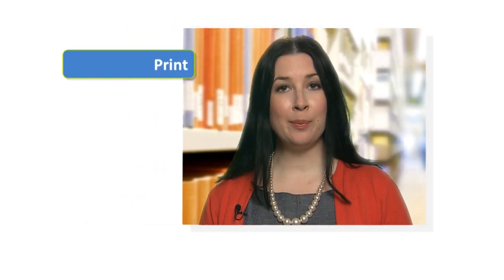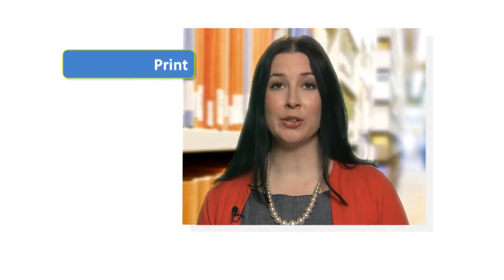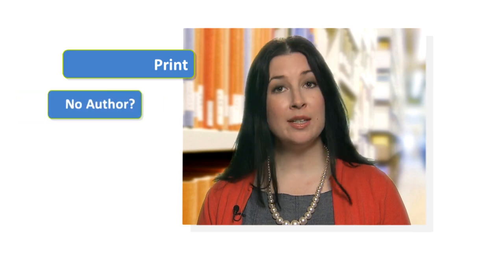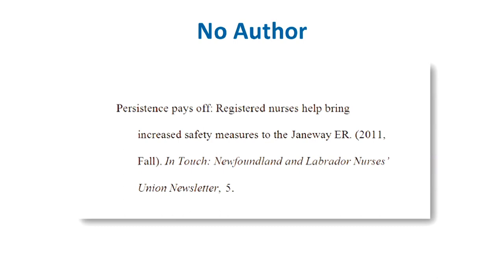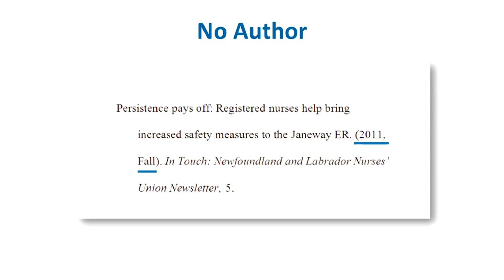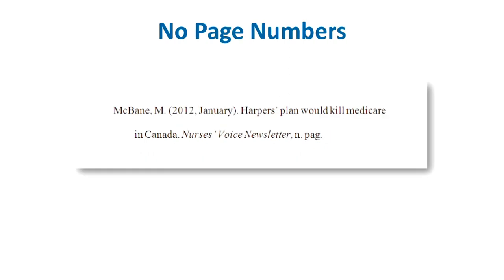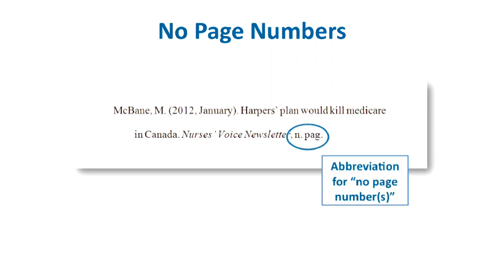Often with newspaper, magazine, and newsletter articles, there is no author listed, or the pages are unnumbered. In that case, start with the title of the article instead of an author's name, followed by the date. If the pages aren't numbered, use the abbreviation n.pag. to indicate no page numbers.